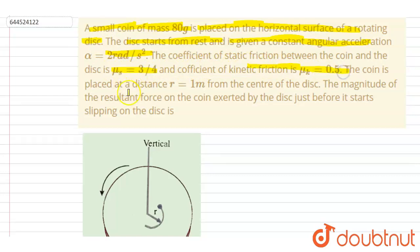The coefficient of static friction between the coin and the disc is given, and the kinetic friction coefficient is this. The radius is one meter from the center. Find the magnitude of the resultant force on the coin exerted by the disc just before it starts slipping.